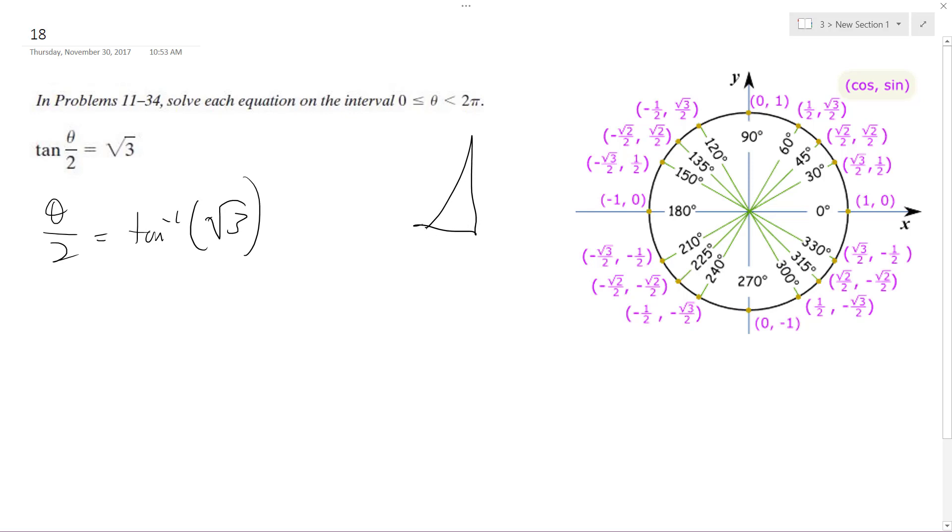Tangent of root 3 there, so it's going to be quadrant 1, so it's going to be π over 3. This is our opposite over adjacent.